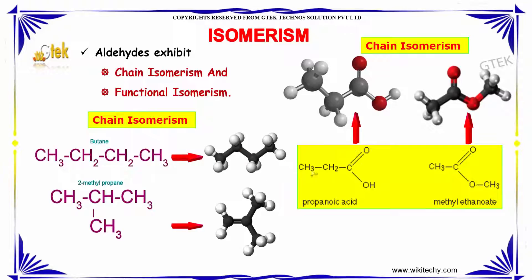Chain isomerism is where compounds have different types of carbon chain but have the same molecular formula, as we can see here. For example, propanoic acid and methyl ethanoate show chain isomerism.